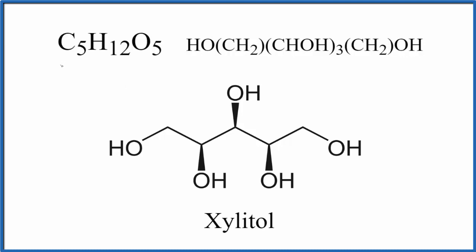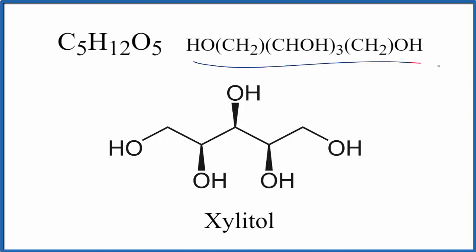If you're given this formula for xylitol, it would be difficult to come up with this structure just by looking at it. There are probably a number of different ways you could arrange this — different isomers that would be valid Lewis structures. So just with this formula, it would be difficult to come up with the Lewis structure. If you were given the structure written in condensed form, that wouldn't be so bad.